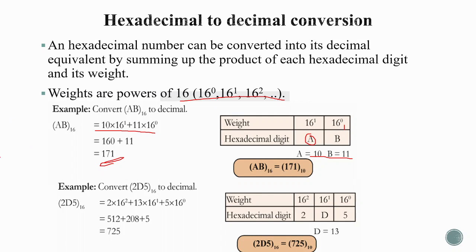Another hex example: 2D5 base 16 converted to decimal. Write digits 2, D, 5 with weights 16², 16¹, 16⁰. Since D = 13, substituting the values: 2 × 256 + 13 × 16 + 5 × 1 = 512 + 208 + 5 = 725.